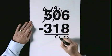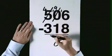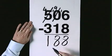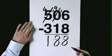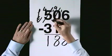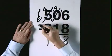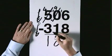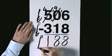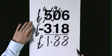9 take 1 is 8. 4 take 3 is 1. 188. 5 pounds and 6p subtract 3 pounds and 18p would make 1 pound 88.